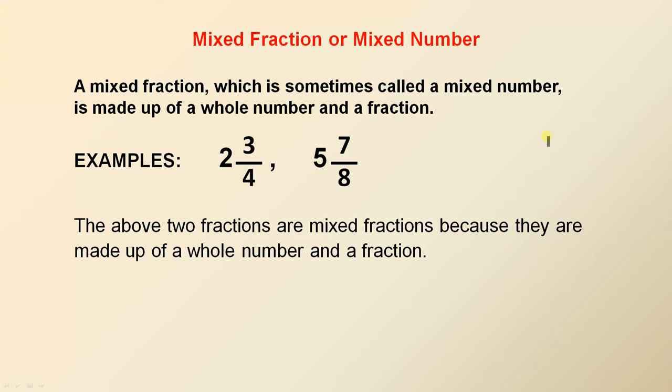Mixed fraction or mixed number. A mixed fraction, which is sometimes called a mixed number, is made up of a whole number and a fraction. So here you see the whole number is two, and the fraction is three over four. Here the whole number is five, and the fraction is seven over eight. So the above two fractions are mixed fractions because they are made up of a whole number and a fraction.